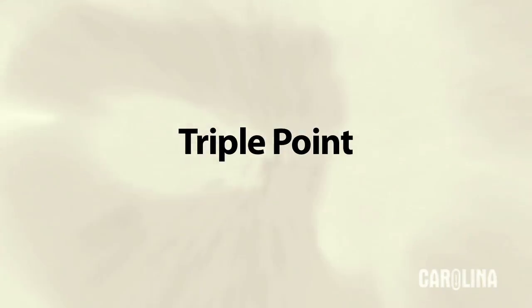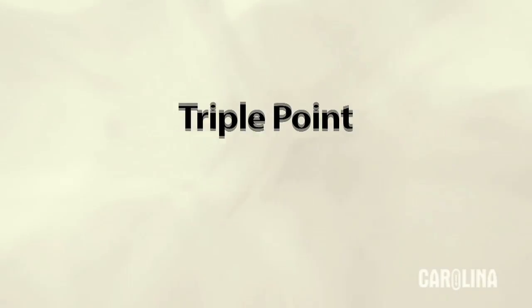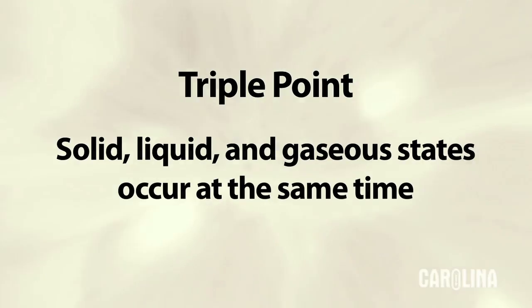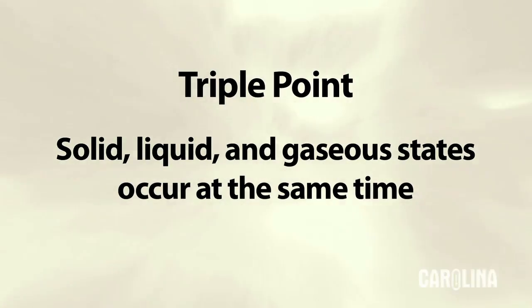Normally we find carbon dioxide in a solid form of dry ice or as a gaseous form in the atmosphere. Under the correct conditions, we can observe the triple point where the solid, liquid, and gaseous states occur at the same time.